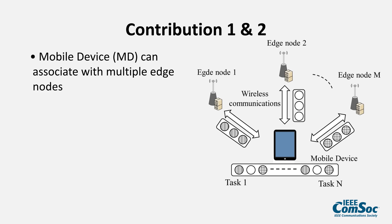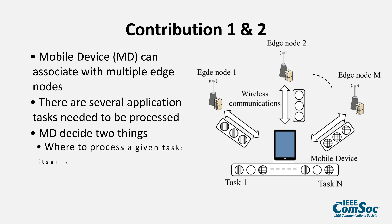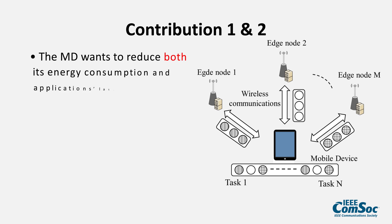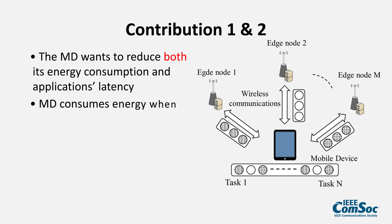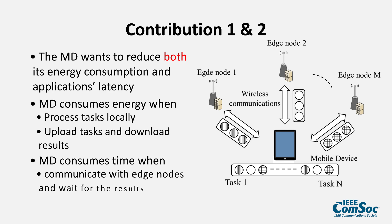Regarding the first two contributions, we consider a model where a mobile device can associate with multiple edge nodes. At the mobile device, there are several application tasks that need to be processed. The mobile device decides two things: where to process a given task and its local CPU frequency. The mobile device wants to reduce both its energy consumption and application latency. It consumes energy when it processes tasks locally and when it uploads tasks and downloads results. It consumes time when it communicates with edge nodes, waits for results, and when it processes tasks locally.